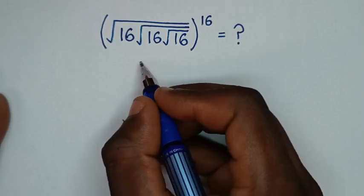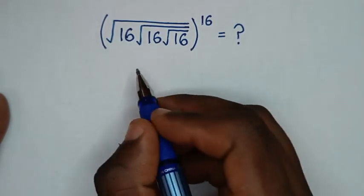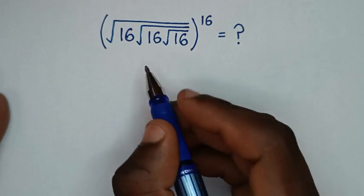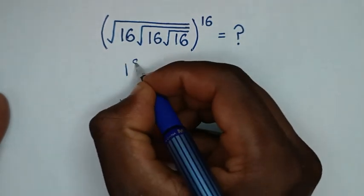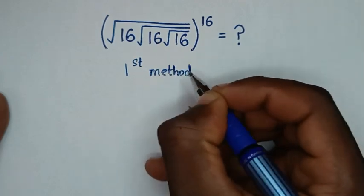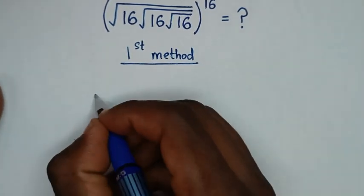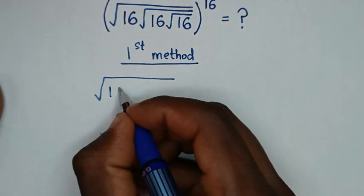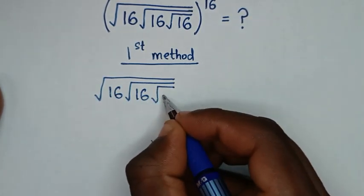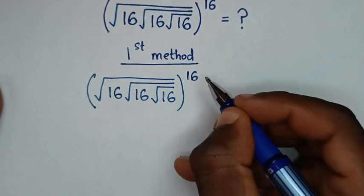Hello, you are welcome to solve this math problem. To solve this problem, we have two methods, or two solutions. Let's call this the first method. From our problem, which is square root of 16 under square root of 16 under square root of 16, bracket power of 16.